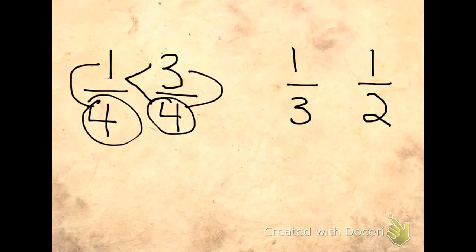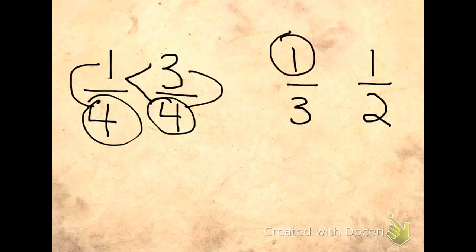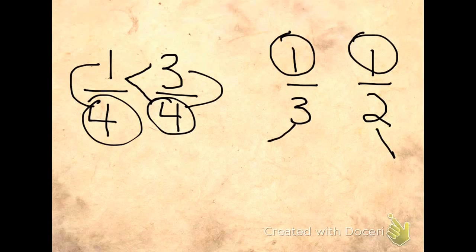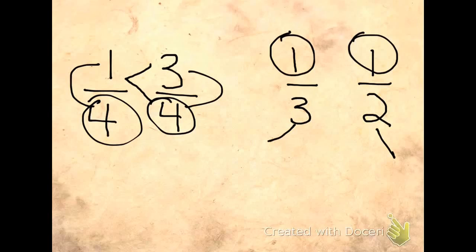In this case, 1 fourth is less than 3 fourths. If the fractions have the same numerator, then we look at the denominators. The bigger the denominator, the smaller the fraction, because that means you have to share with more people. The smaller the denominator means it's the greater fraction. So, 1 third is less than 1 half.